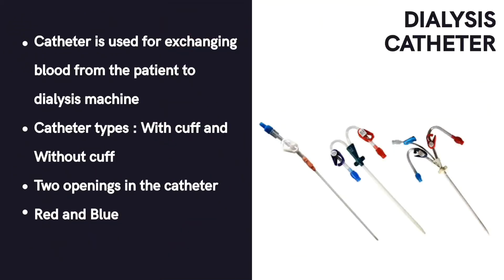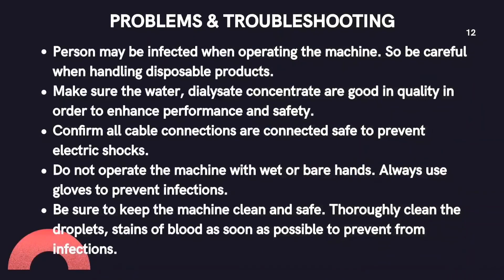The catheter is used for exchanging blood between the patient and the dialysis machine. It comes in two types: with cuff and without cuff. The catheter without cuff is used only for shorter periods in peritoneal dialysis. It consists of two openings — the red colored opening, which indicates removal of arterial blood from the patient into the machine, and the blue colored opening, which is the venous opening where purified blood is returned to the patient.